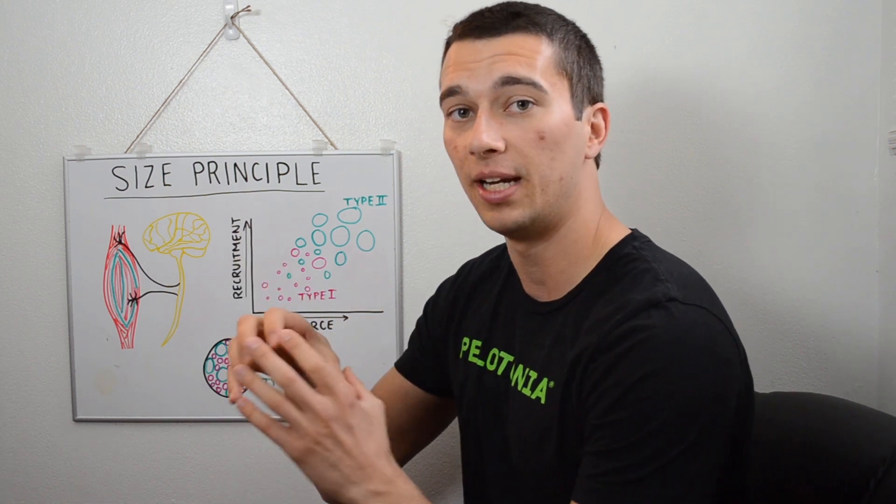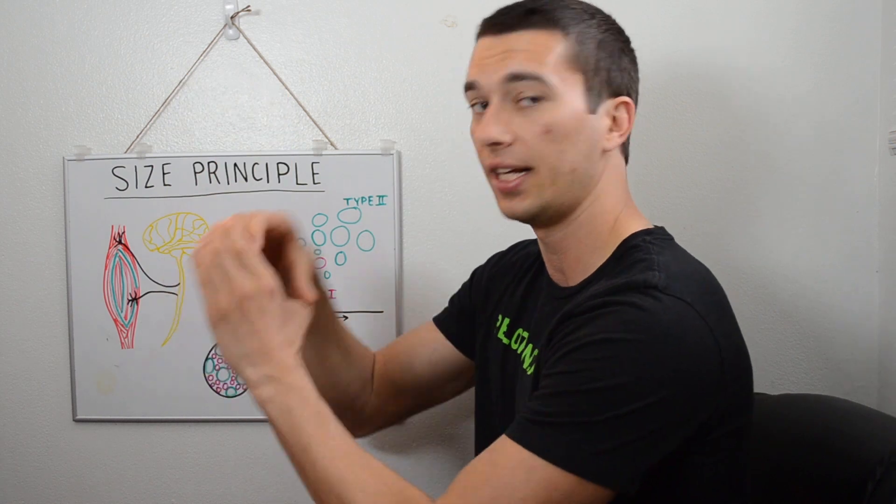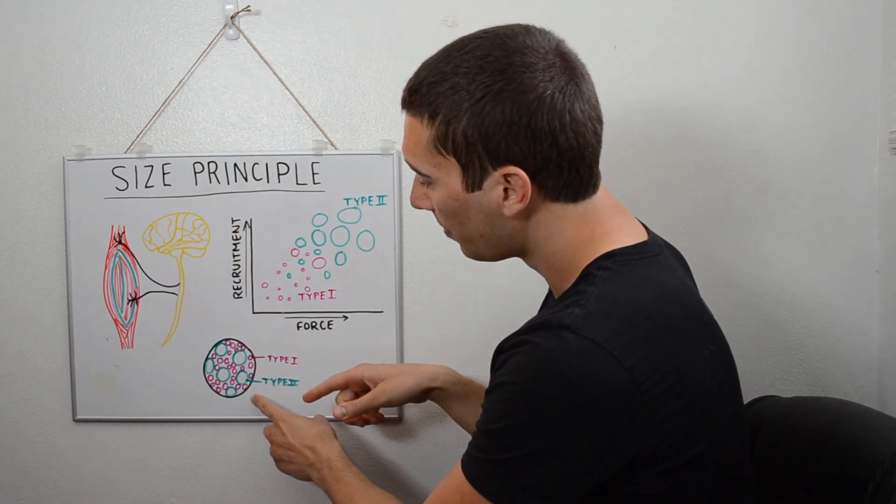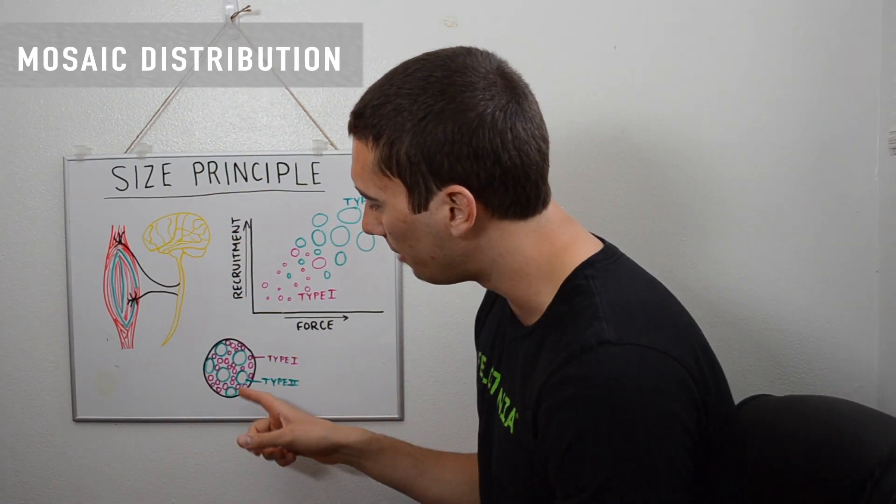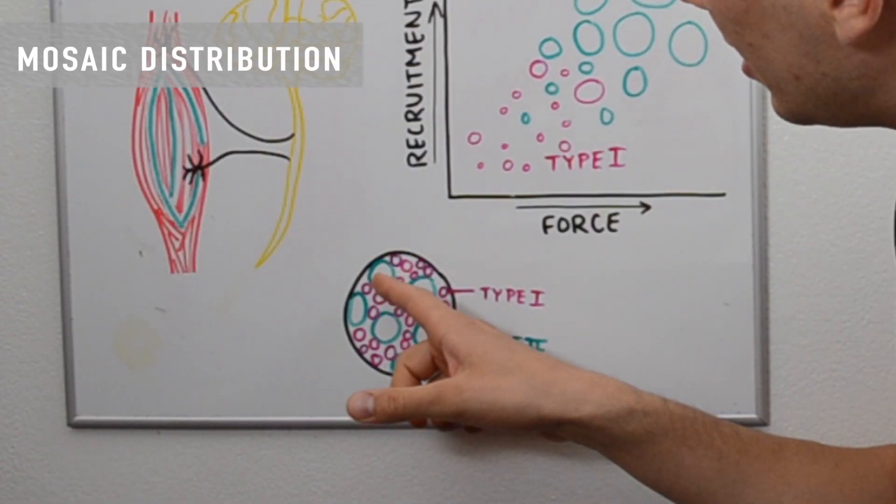If we zoom in and think about a cross-section of a muscle, meaning if you cut the bicep right in half and then look at it, this is kind of what it would look like. We call this a mosaic distribution of fibers.